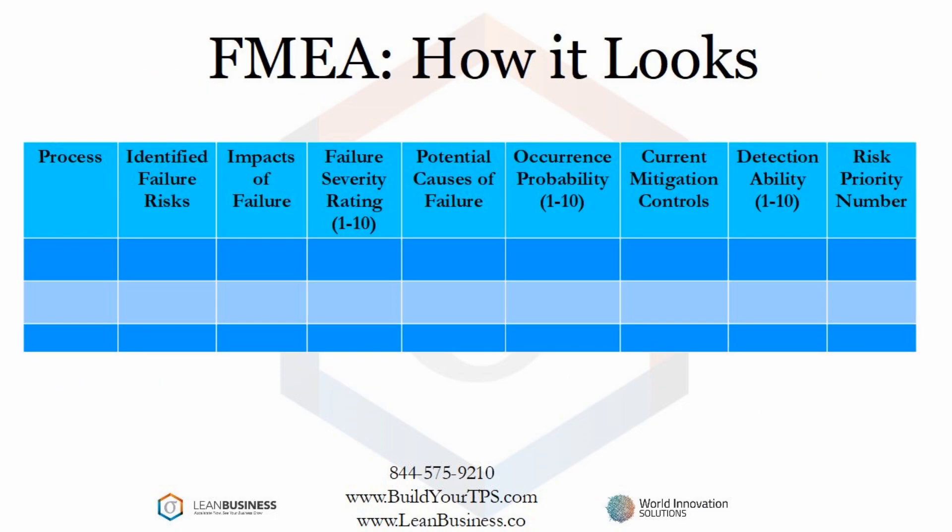First, identify the process. Next, brainstorm all the different failure risks. Then, for each identified failure risk, you assign an impact on the process, should that failure occur. Following that, for every identified risk, you list the potential causes of that failure, followed by the perceived probability of the occurrence of that failure.